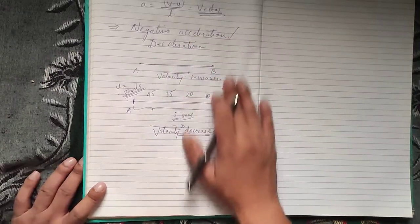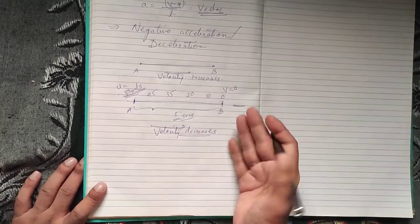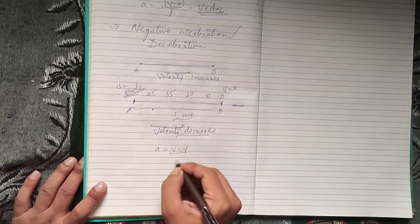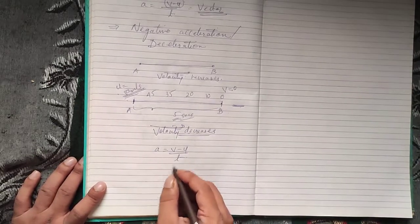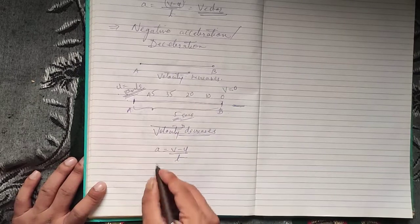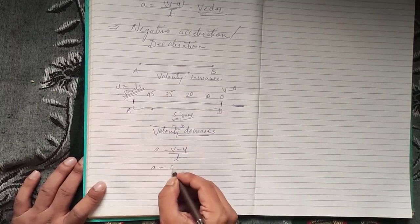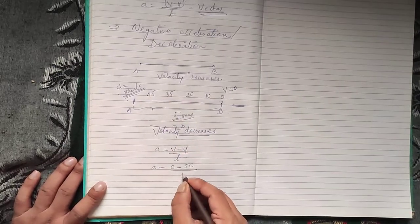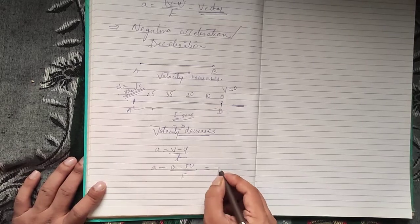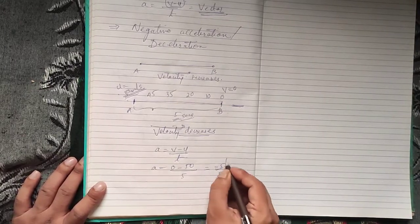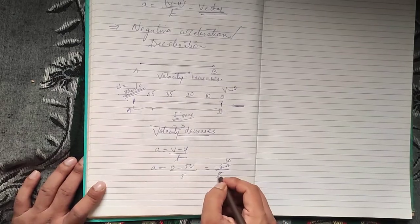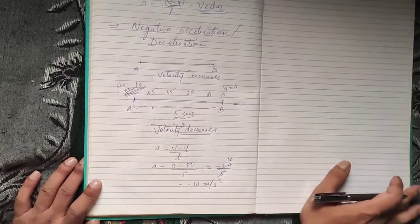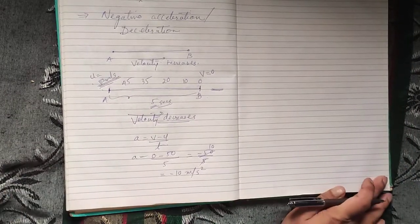The formula for negative acceleration does not change — it remains a equals v minus u upon t. In this example, a equals 0 minus 50 upon 5 seconds. That gives minus 50 upon 5, which equals minus 10 meters per second square. So the answer is minus 10 m/s².